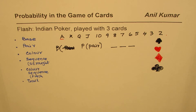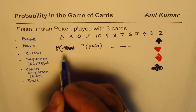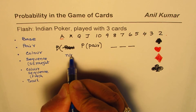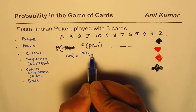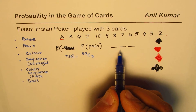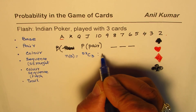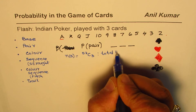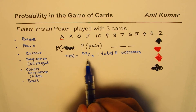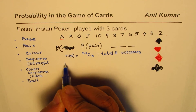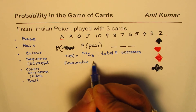Since we are selecting three cards out of 52, the sample space — the total number of combinations — is 52 choose 3. This becomes the denominator for our probability calculation, representing the total number of outcomes. Now let's figure out the favorable outcomes.